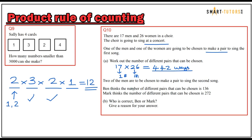We made a small error in a previous video — apologies for that. Now the next part of question ten: two of the men are chosen to make a pair to sing the second song. Ben thinks there are 136 different pairs; Mark thinks there are 272. This time the selection is only from one group — the men's category — so division will take place.